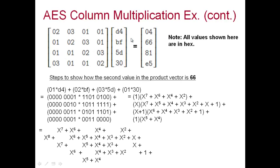For another example, to get the second row, first column element (which should be 66), we use the second row of the fixed matrix: 01 × D4 + 02 × BF + 03 × 5D + 01 × 30. We expand each term into binary and then into polynomial form.